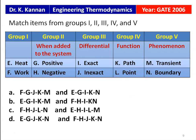This is from GATE 2006: a match-the-item question. Group 1 lists heat and work. Group 2 asks whether heat when added to the system is positive or negative. Group 3 asks whether the differential is exact or inexact. Group 4 asks about path function or point function. Group 5 asks about the phenomenon: transient or boundary. The correct matching is: heat when added to the system is positive, it is an inexact differential, which is a path function and a boundary phenomenon.